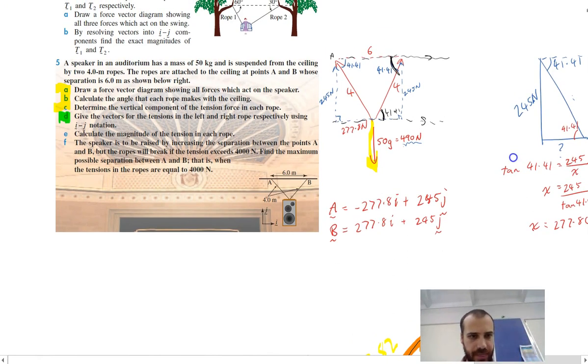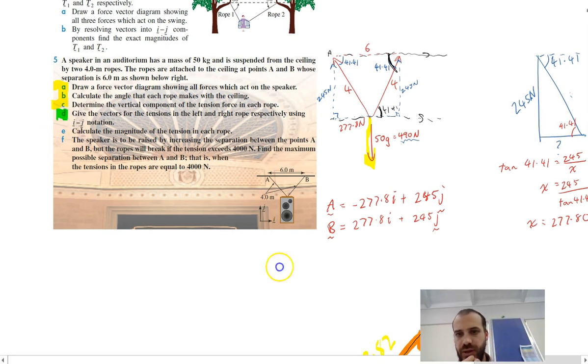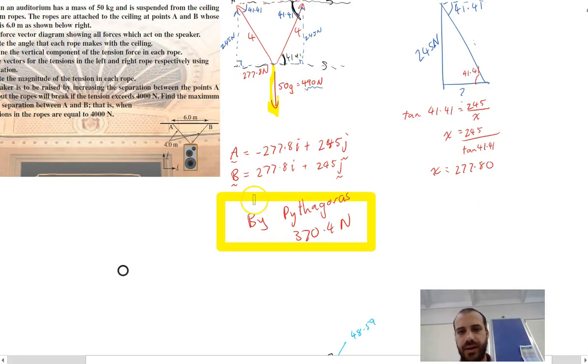Now, if I just continue here, calculate the magnitude of the tension in each rope. So you can do that, if you know the tension here, and you know the tension here, you can essentially use Pythagoras. You can just do 245 squared, 277.8 squared, find the square root of that, and you'll get your tension in that rope here. So there, I'm not going to do the working for Pythagoras. It's just the newtons squared, newtons squared.